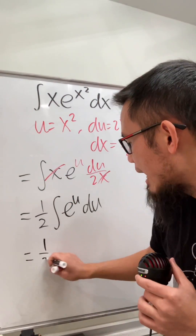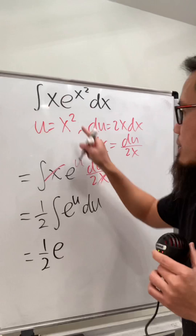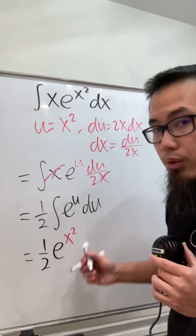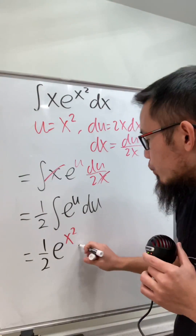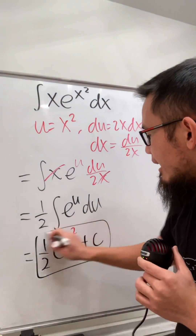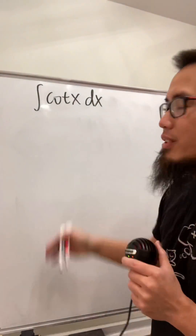So here we have one-half e to the u, but u is equal to x squared, so we can just put that down, and we are done — just add a plus c.